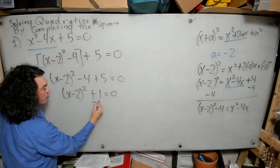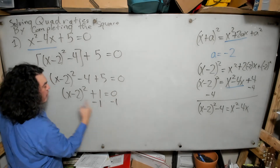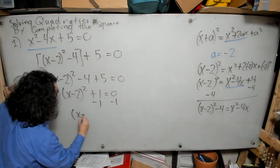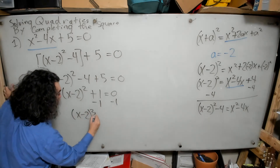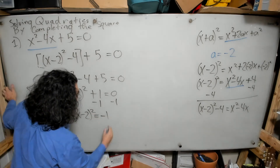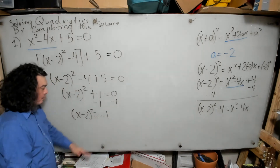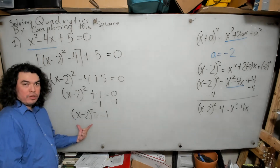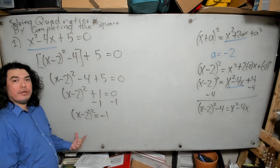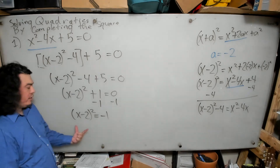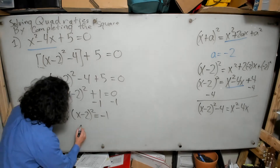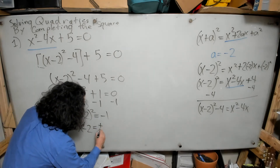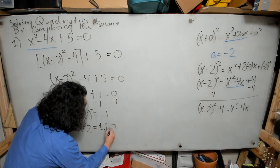I subtract 1 to the other side to get the square term by itself: x minus 2 squared equals negative 1. The opposite of squaring is taking the square root, so x minus 2 equals plus or minus the square root of negative 1.